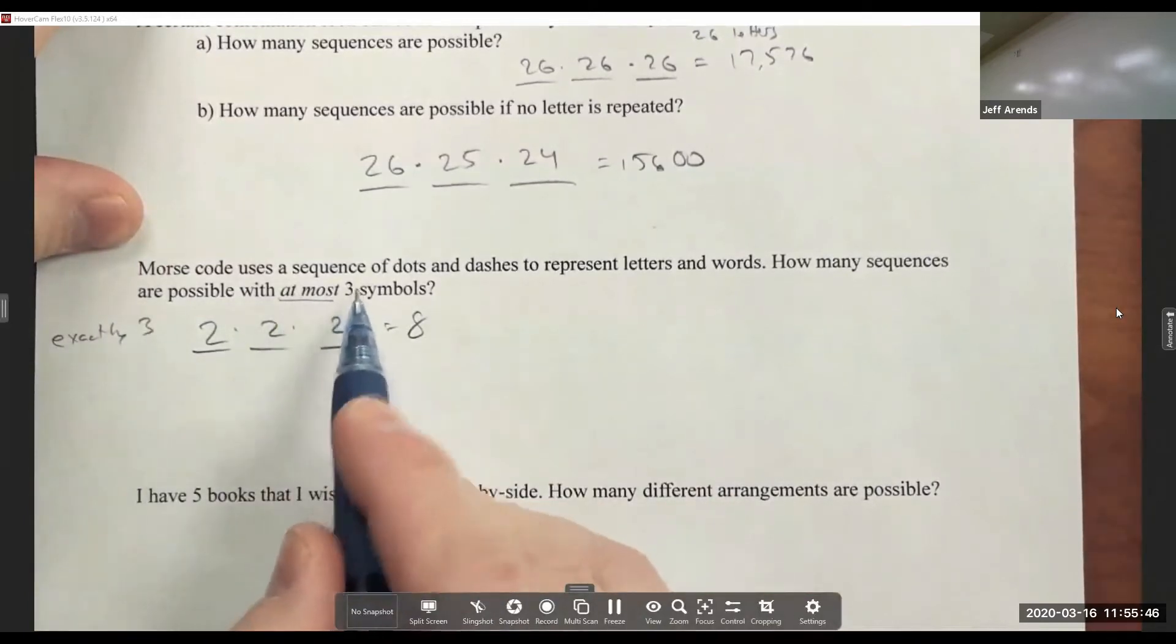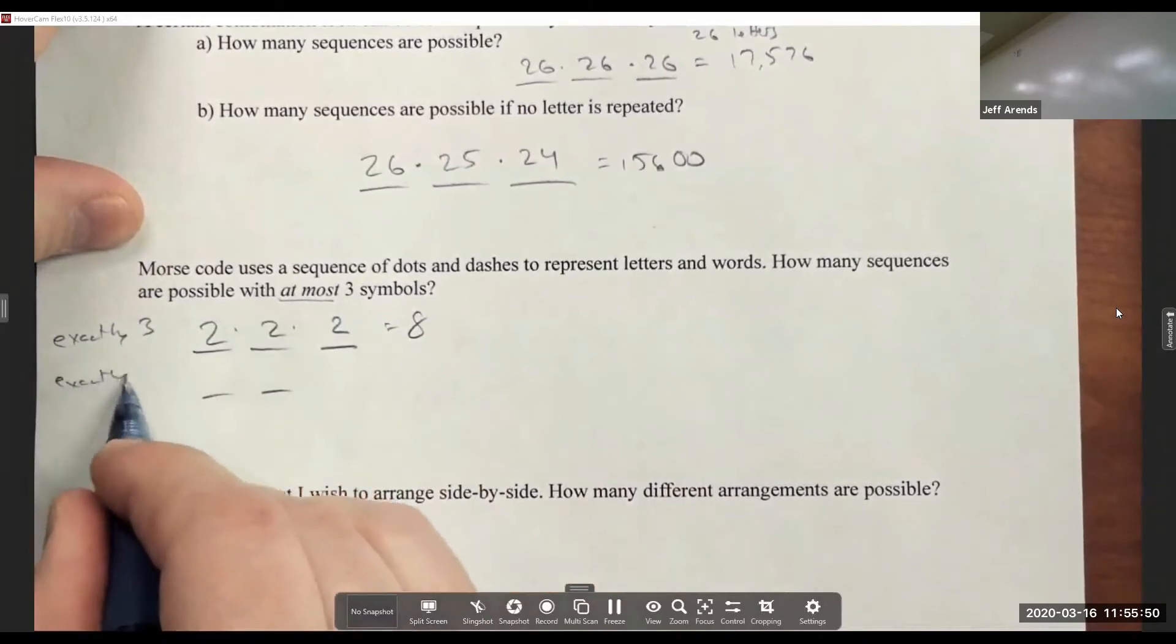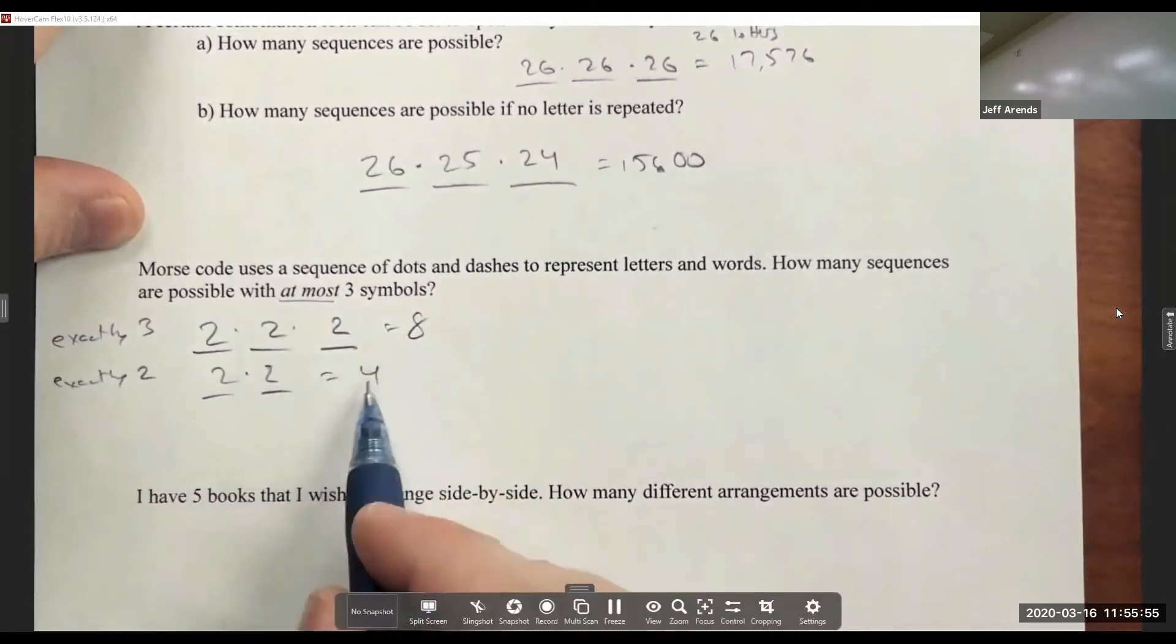But this says 'at most three symbols,' which means I could have exactly two symbols. In that case, two times two is four. There would be four different sequences that have exactly two symbols.